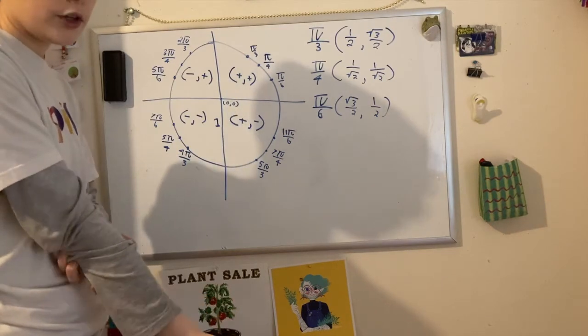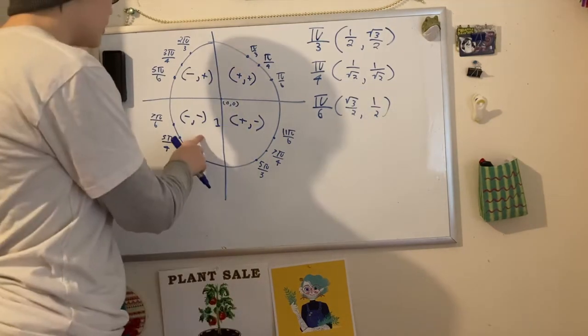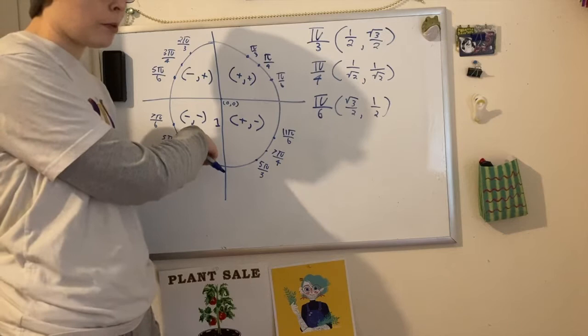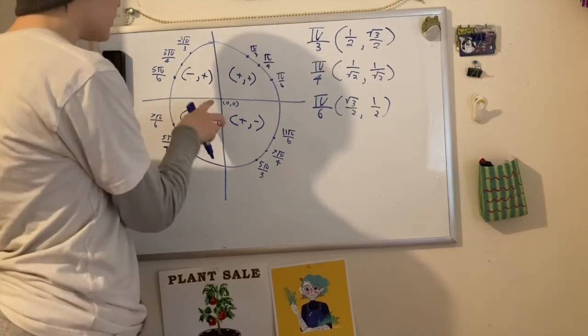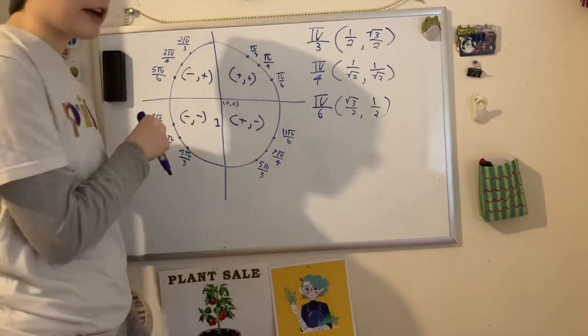Also, as you can tell from these signs, you can tell the sign of the tangent. In this one, since both are negative, tangent is going to be positive. Same for this. In these two, we have two different signs, so sine is going to be negative.